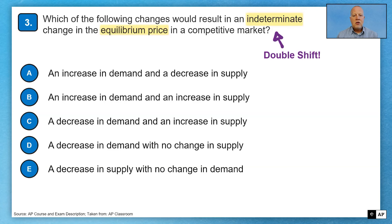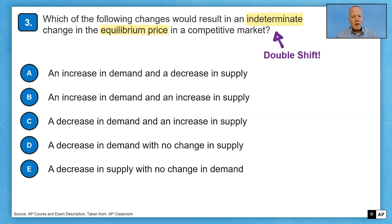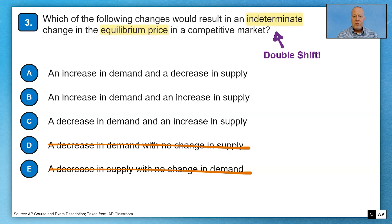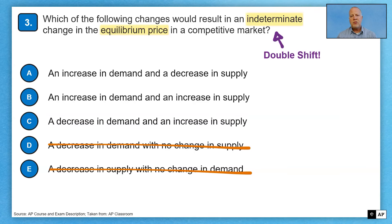The options are: A — increase in demand, decrease in supply; B — increase in demand and increase in supply; C — decrease in demand and increase in supply; D — decrease in demand with no change in supply; E — decrease in supply with no change in demand. Both D and E are single shifts — they cannot be the correct answer. We can eliminate those right now and focus on A, B, and C. The best way to work through those is to have scratch paper nearby, draw a graph, and figure it out.